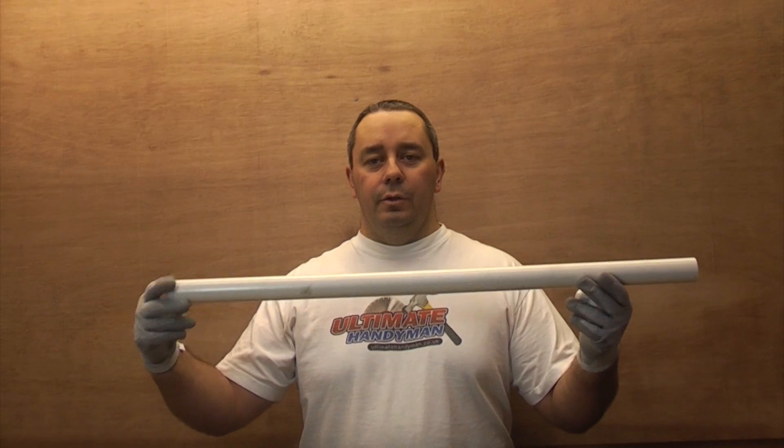This is solvent weld waste pipe, and this particular piece is 32mm. For domestic properties, it's normally either 32mm or 40mm, and this is a socket.